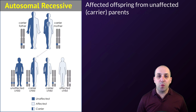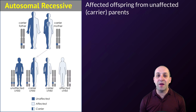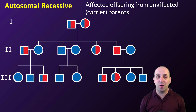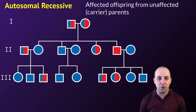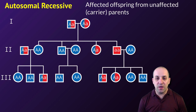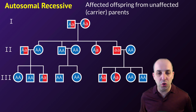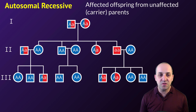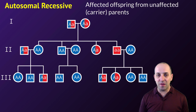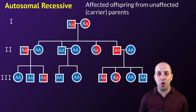Moving on, we have autosomal recessive traits. The key thing to look for here is that you can have affected offspring from unaffected parents, because those parents can be carriers and not show the trait. In this pedigree, we've shaded carriers half red and half blue. You can see in generation two, the male all the way to the right has the trait even though his parents didn't — they were just carriers. That's a dead giveaway that we're probably looking at an autosomal recessive trait.